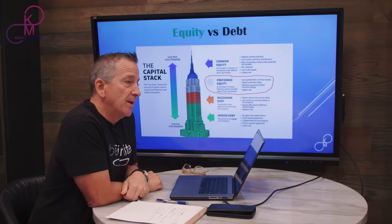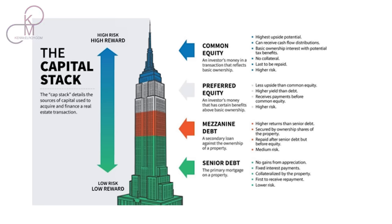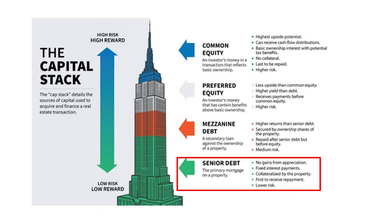In comes the rescue capital, or preferred equity — this is what's affecting most deals right now. Every deal has what we call a capital stack, which details the sources of capital used to acquire and finance a real estate transaction, and can even be used during the life of the transaction to save or rescue it. At the very bottom is the senior debt. The senior debt gets no gains from appreciation of the property, typically has fixed interest payments, is collateralized by the property, is first to receive repayment, and has the lowest risk — which is why it represents the majority of the capital stack.